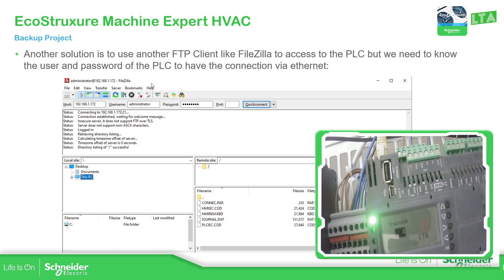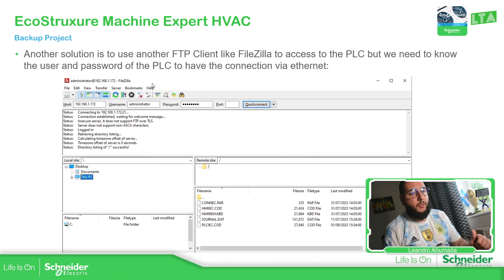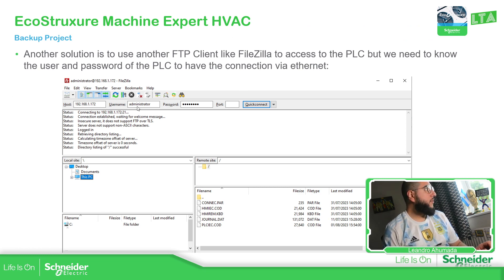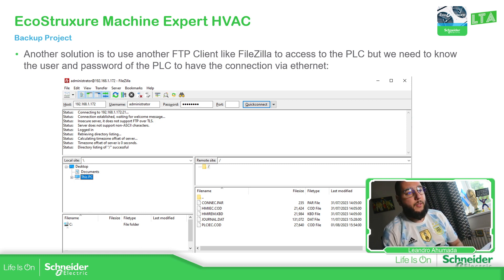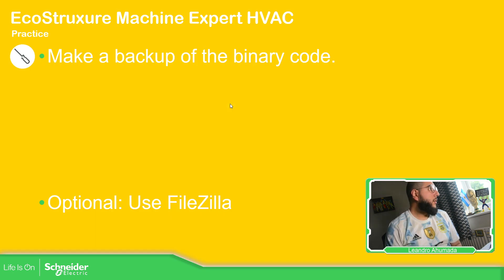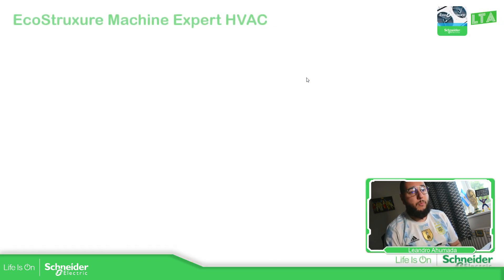Another solution to grab the data is to use FileZilla. The host is the IP address, the username is 'administrator', and the password by default is 'password' — all lowercase. The port is the one you enabled previously. I've already created my backup using the Open File Browser method, so I won't use FileZilla here.